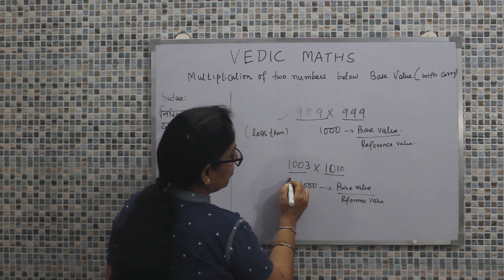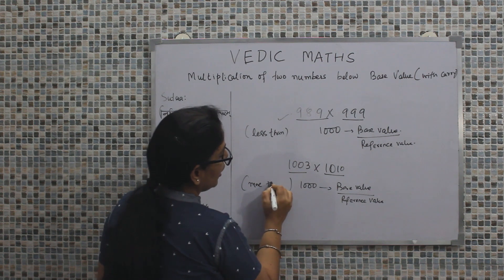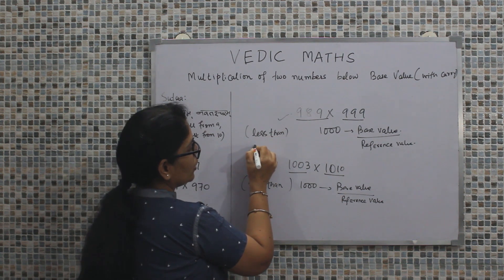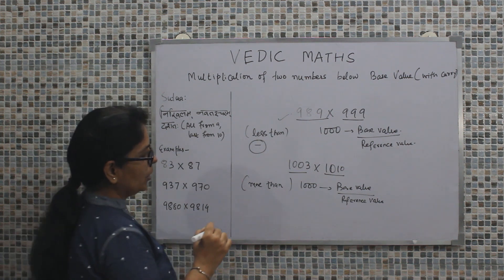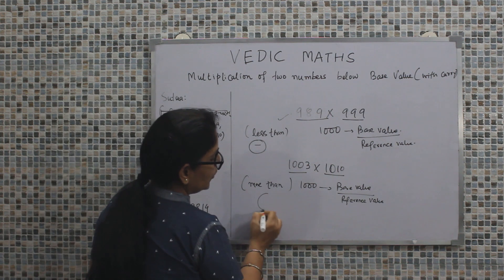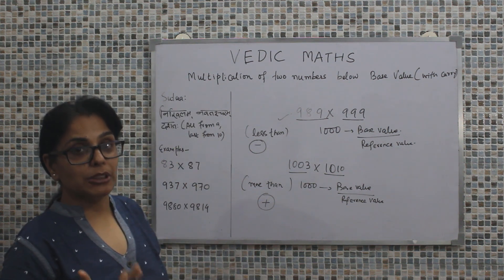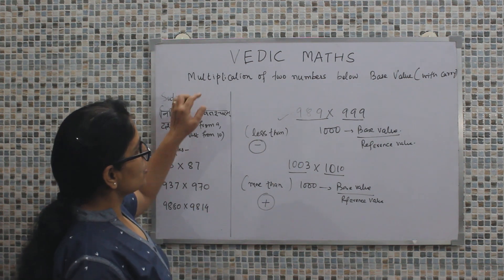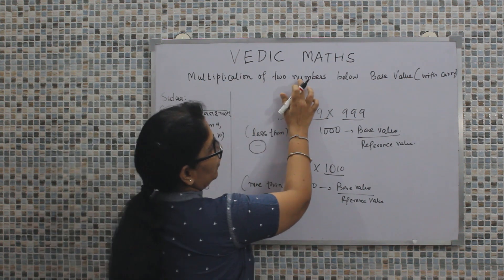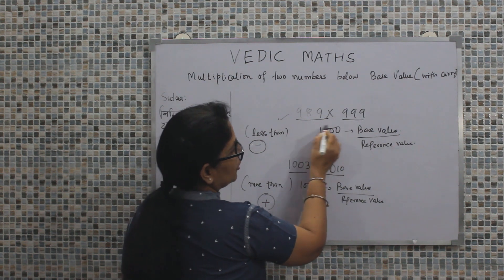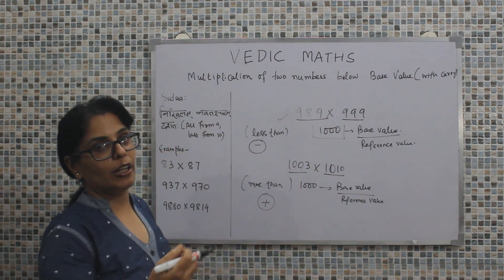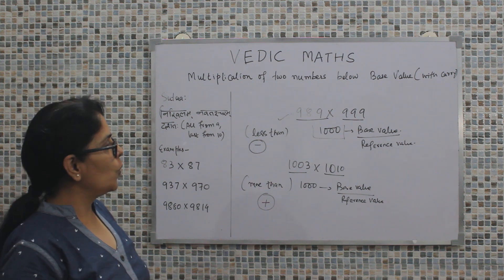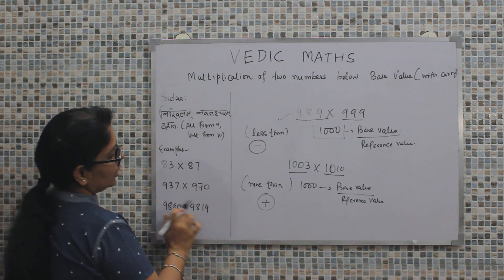When we are talking about less than the base value, it means while doing the calculation, we would be using a negative sign. But when we are talking about more than the base value, there we would be using a plus sign. Because logically, more means plus and less means minus. So here in this particular discussion, we would be talking about multiplication of two numbers below the base value — that is, numbers less than the base value.